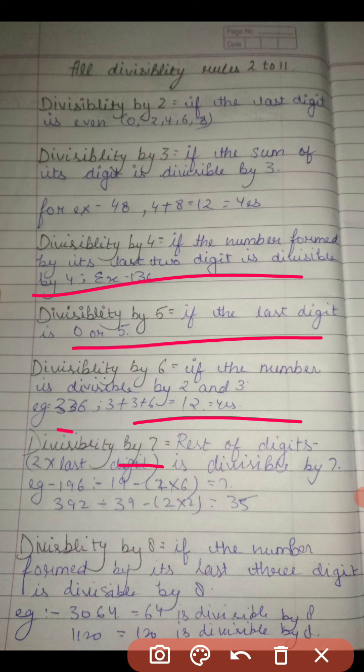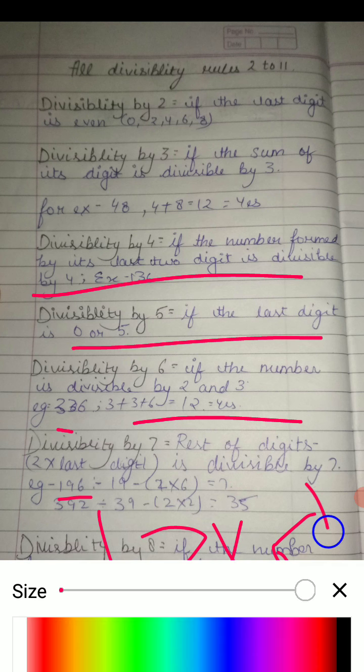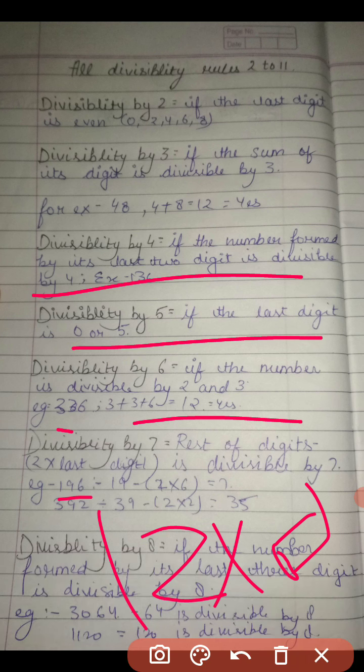Now divisibility by 7. Rest of digits - first you will take its last digit. You can take an example of 196. You will take the last digit, it is 6, then you will multiply it with 2 and place a bracket here.